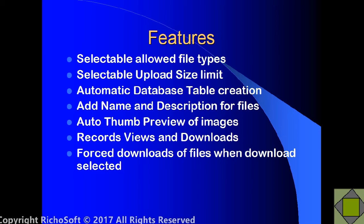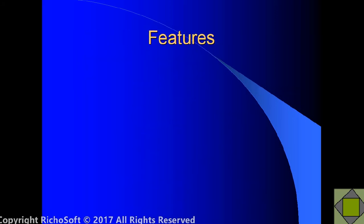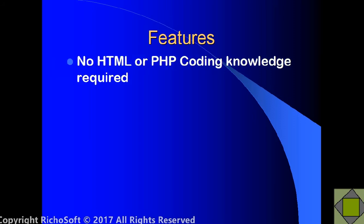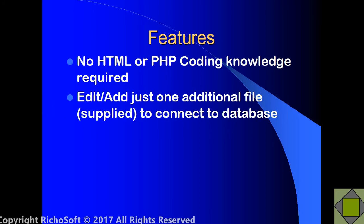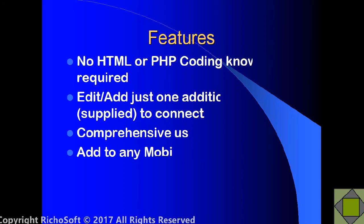The same applies to images and Word documents. All the required files and libraries are automatically added to the relevant pages when you add the panel, and all the necessary files are added in the assets folder under their own exclusive directories. The final key features are: no HTML or PHP coding knowledge required; you only edit or add just one additional file — which is supplied — to connect to the database; and it comes with a comprehensive user guide. You can add it to any MobiRise site.